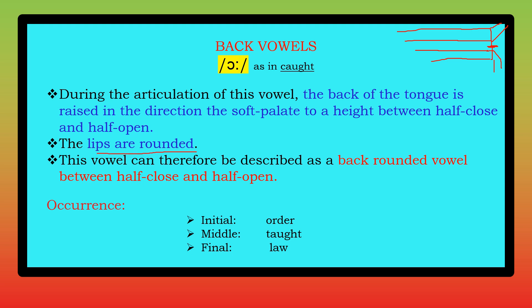The back of the tongue is raised towards the soft palate, between half-close and half-open position — in the middle position. The lips are in the rounded shape. So it can be described as a back rounded vowel between half-close and half-open. Examples: 'caught', 'lock' — initial, middle, and final positions, for example 'got'.